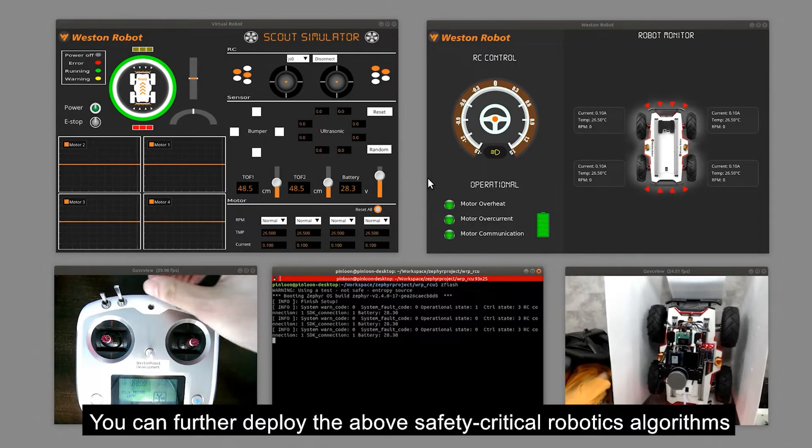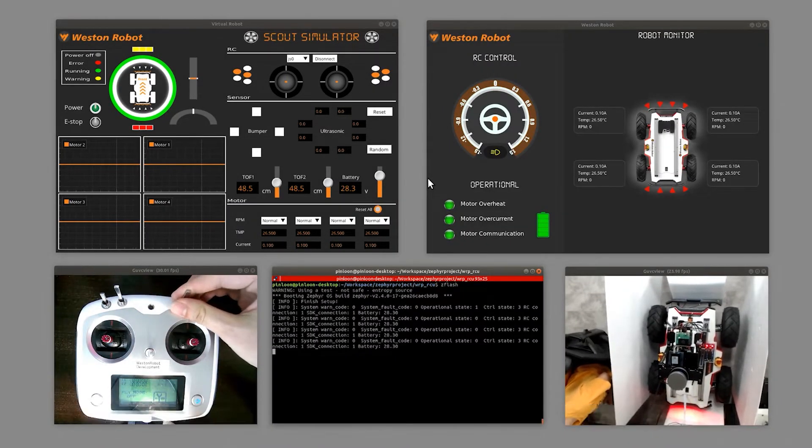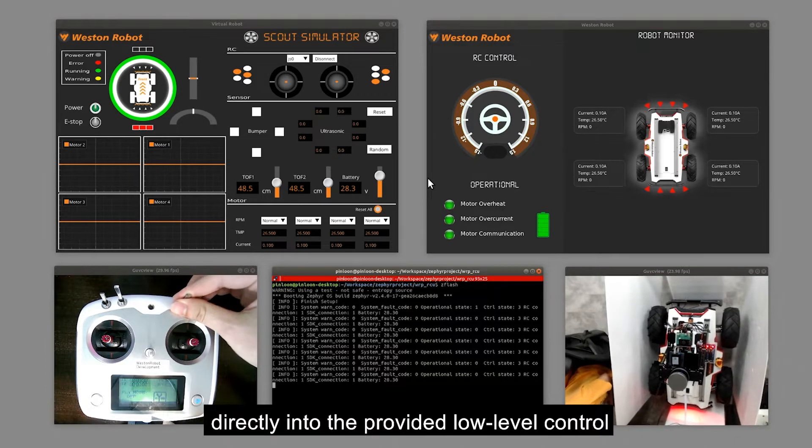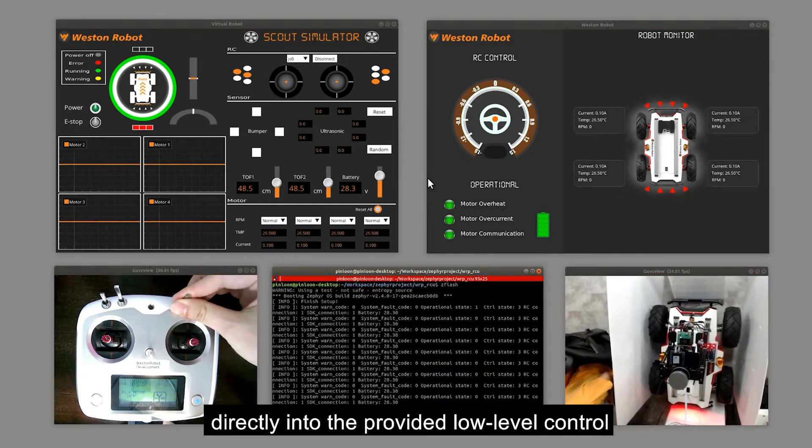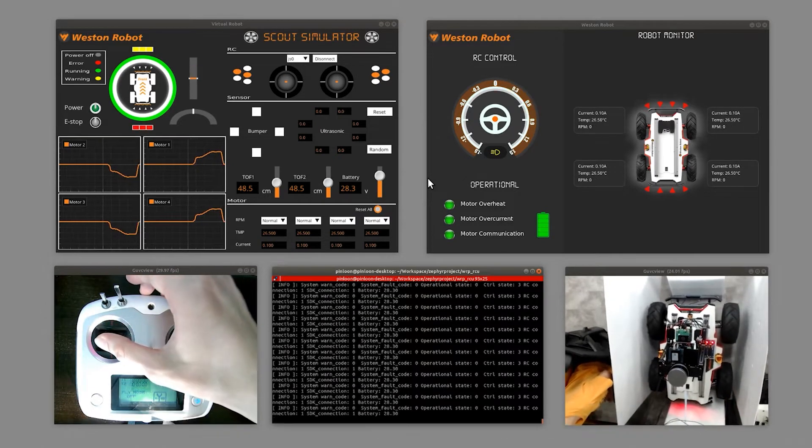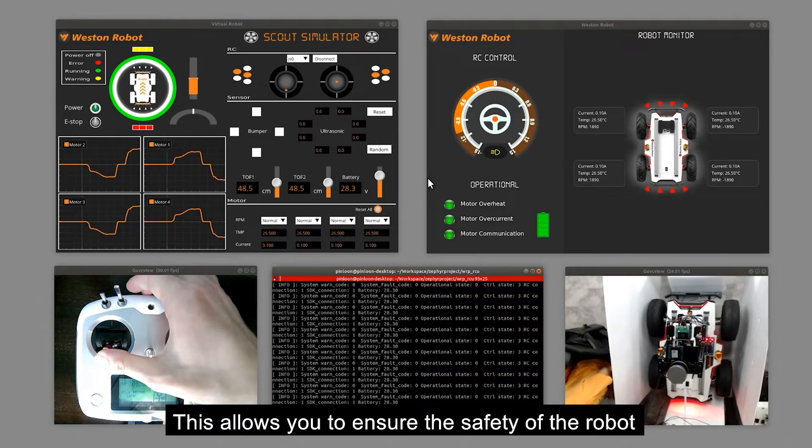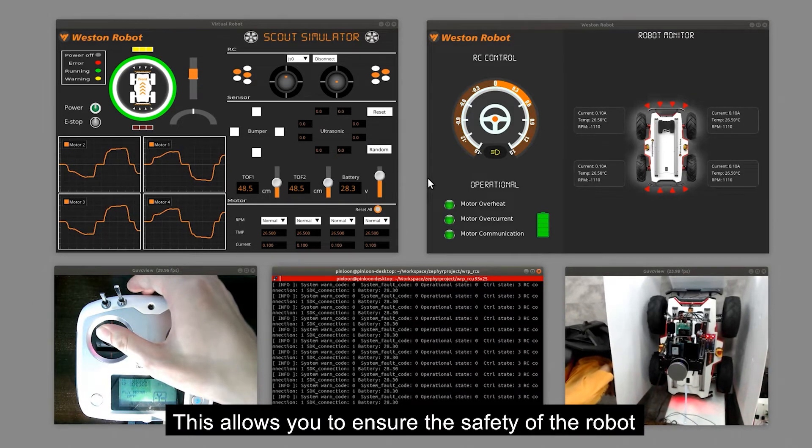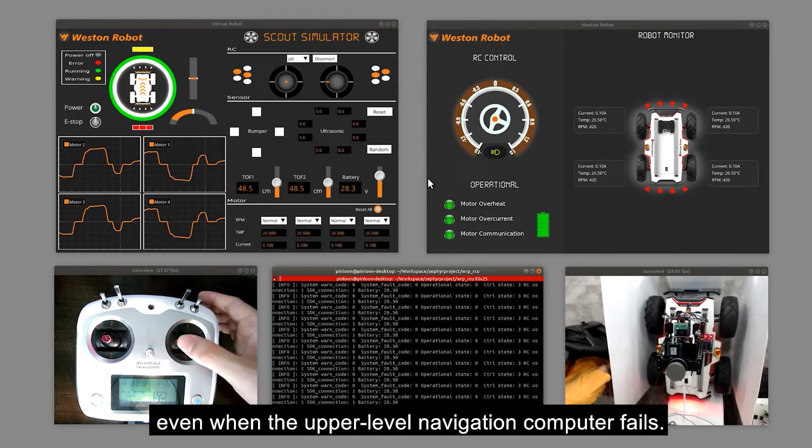You can further deploy the safety-critical robotics algorithms directly into the provided low-level control and connectivity board running a real-time operating system. This allows you to ensure the safety of the robot even when the upper-level navigation computer fails.